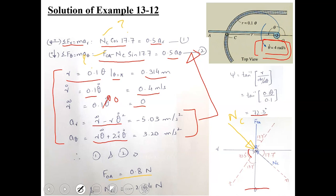This is the same approach used in statics: if the solved sign is positive, the assumption is correct; if negative, the assumed direction is reversed. So NC acts in the positive N direction with a magnitude of 2.64 Newtons. The solution to Example 13-12 is now complete.